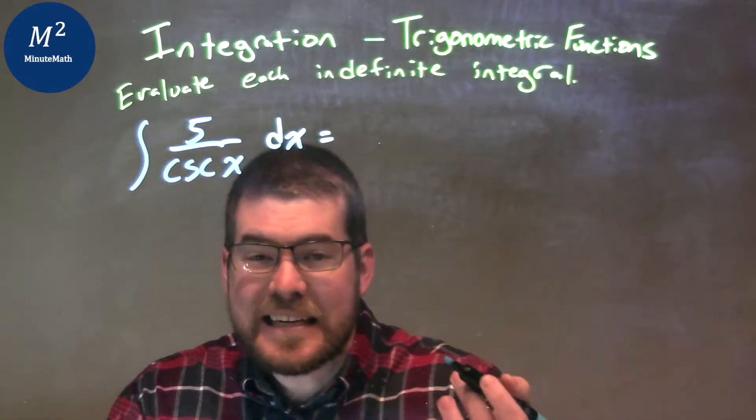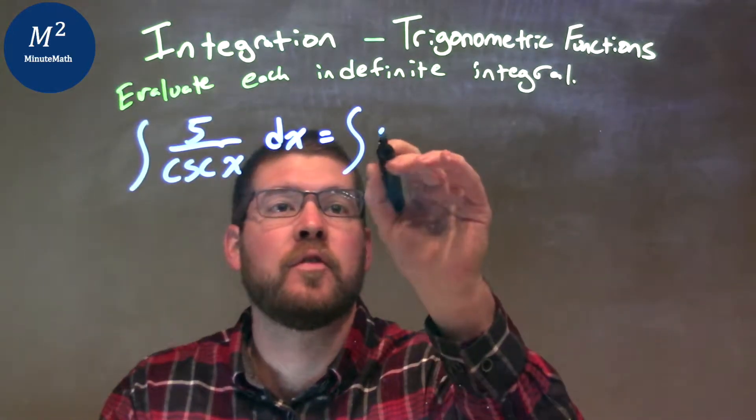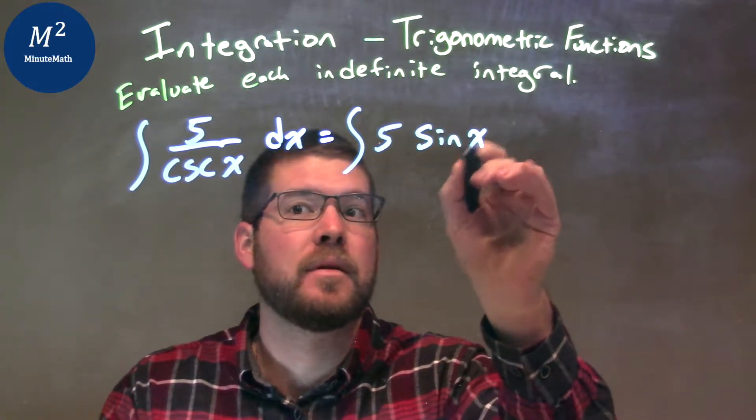I know 1 over cosecant of x is sine of x, so this is the same thing as the integral of 5 sine of x dx.